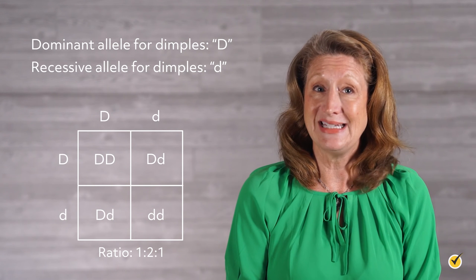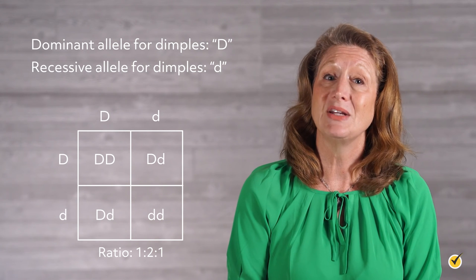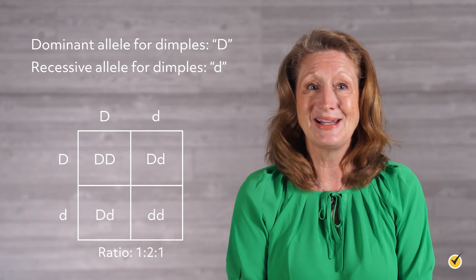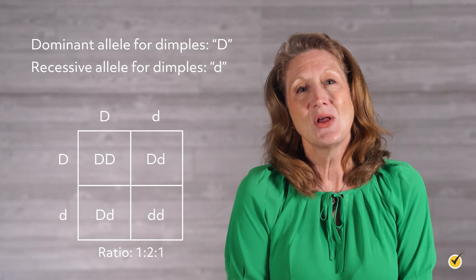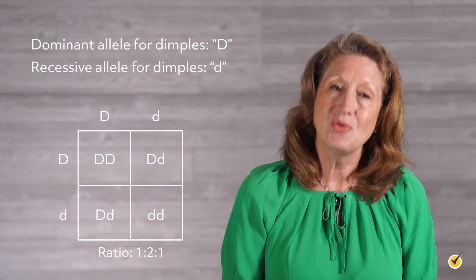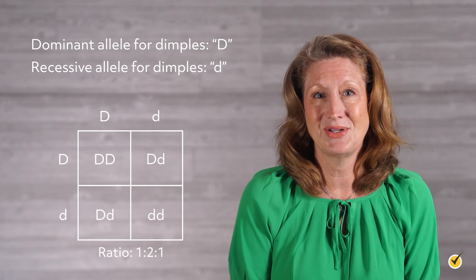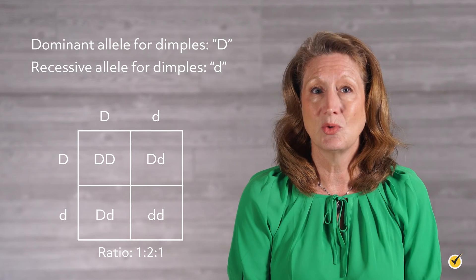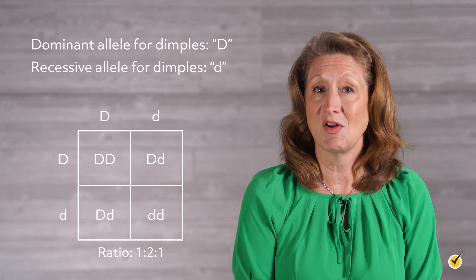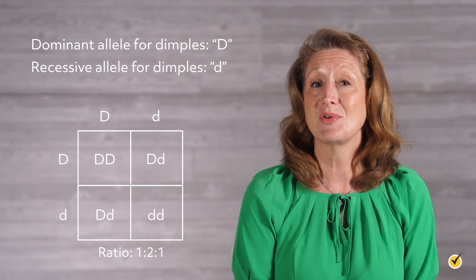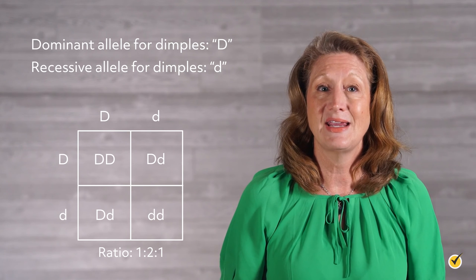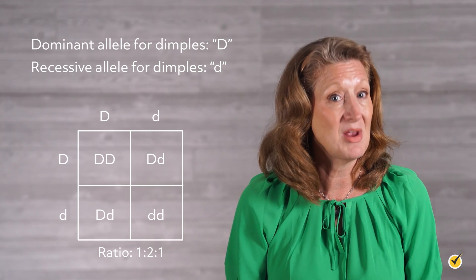Since the dominant allele is D, offspring with the genotypes DD and Dd will all have dimples because the D allele overrides the recessive allele. We also have one homozygous recessive offspring where there is no dominant allele, so this combination will yield no dimples. With this, we can say the phenotypic ratio is 3 to 1, dimples to no dimples. We can also say that 75% of the offspring will have dimples while 25% will not. This example shows how the genotype and phenotype, while related, can give us different but equally important information about inheritance.